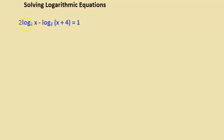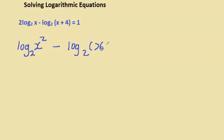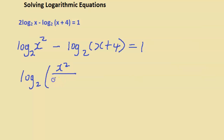Here's another problem. Before we consolidate, we don't want any coefficients. The 2 in front of the log — using the third law — can be moved as a power of x, giving us log of x squared. Subtracting, we then consolidate by dividing, giving log base of x squared over (x plus 4).